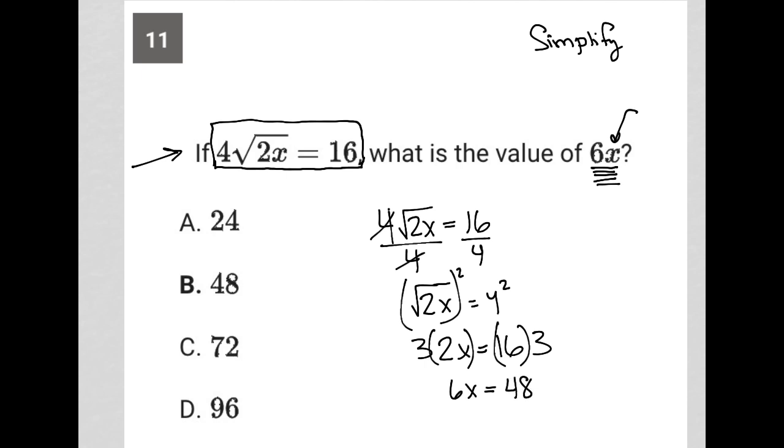And therefore, there is my answer. 6x is equal to 48, and therefore choice B is the correct answer.